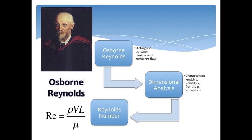Using dimensional analysis, you can find a common relationship between the characteristic length, velocity, density, and viscosity of the fluid being tested. These parameters combined make Reynolds number.